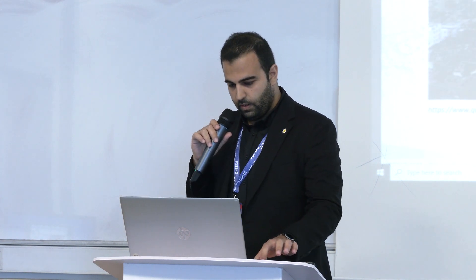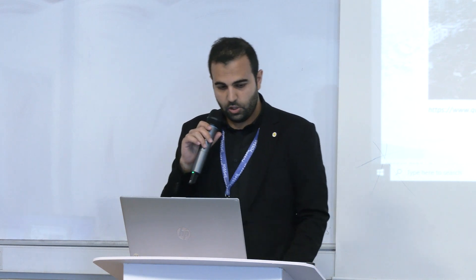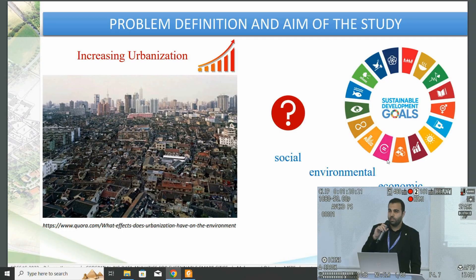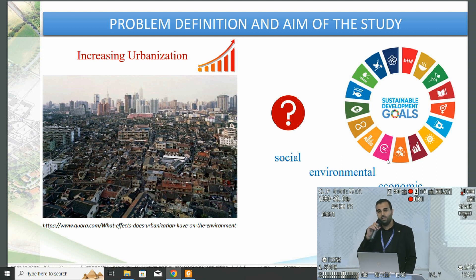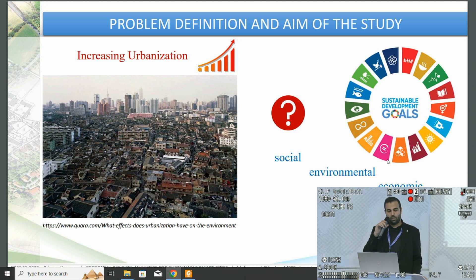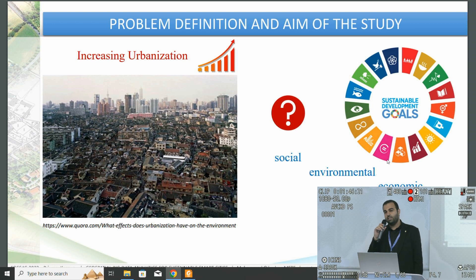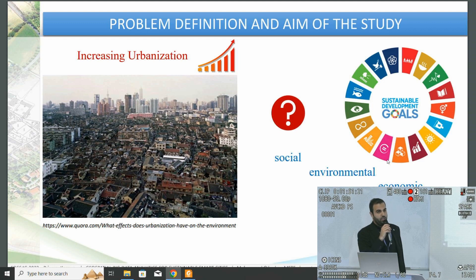Starting with the problem definition: increasing urbanization across the world makes cities more crowded and complex. This situation brings along many social, environmental, and economic problems such as housing, traffic density, and air pollution. It is necessary to overcome these problems and manage cities effectively. That is why there is a need for sustainable smart cities that utilize information and communication technologies.